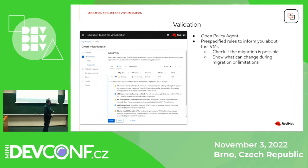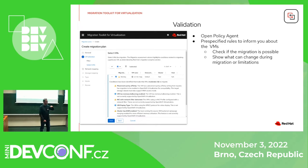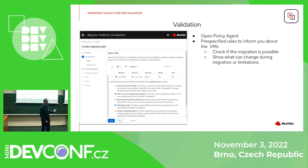We also have validation. When we gather the VMs, we check if they can even be migrated and in what way they will be affected — for example, if names are correct. We do all sorts of checks.